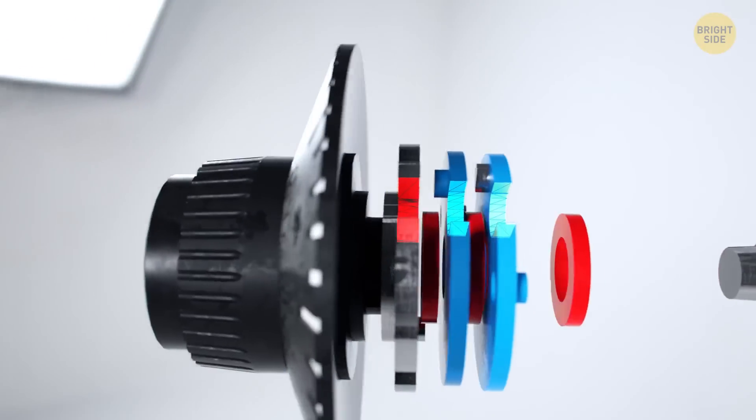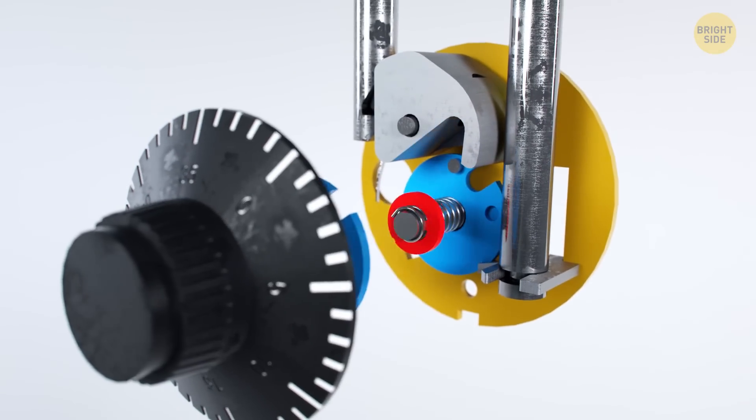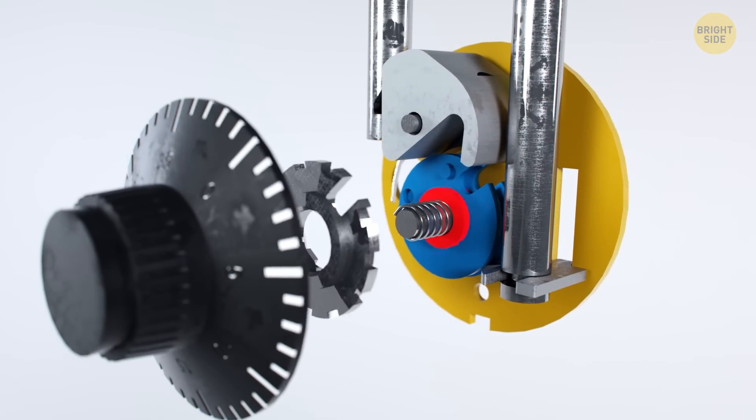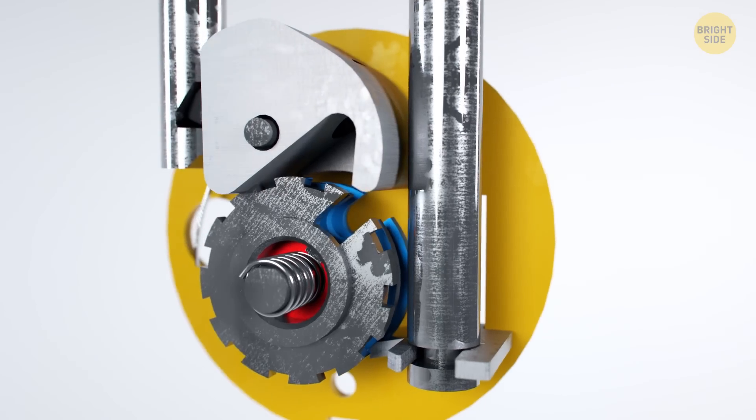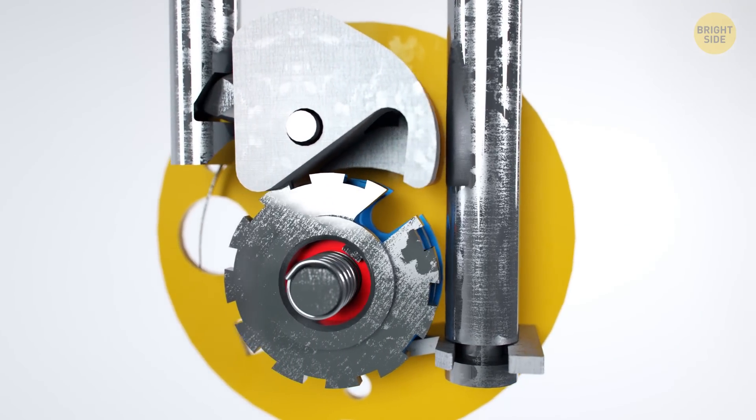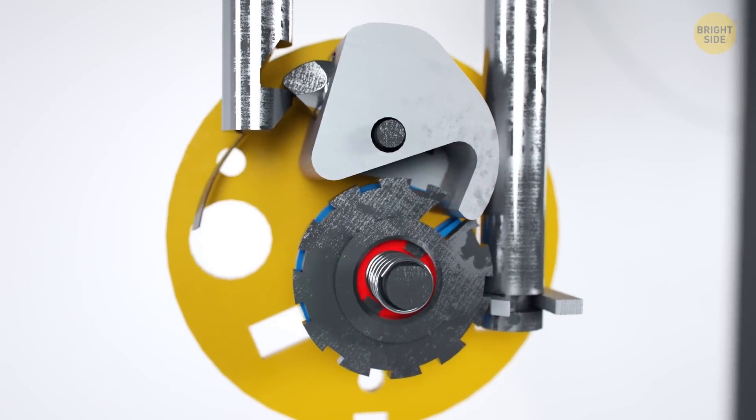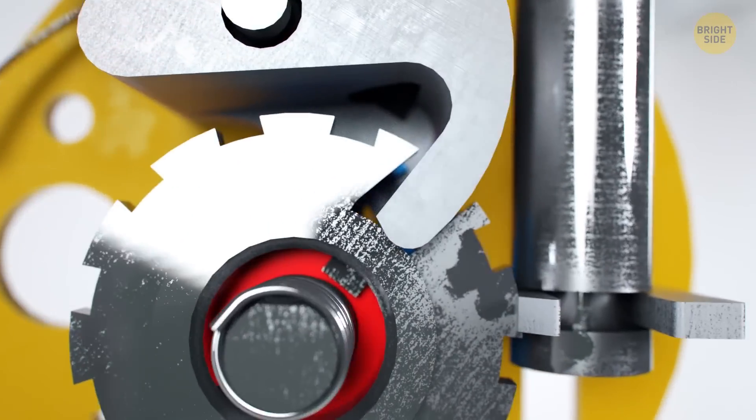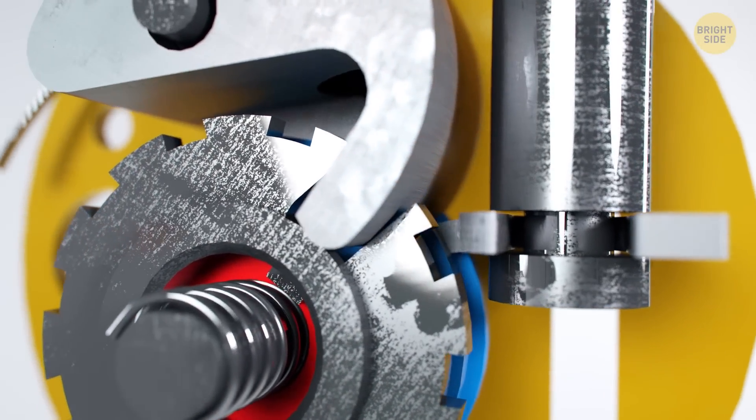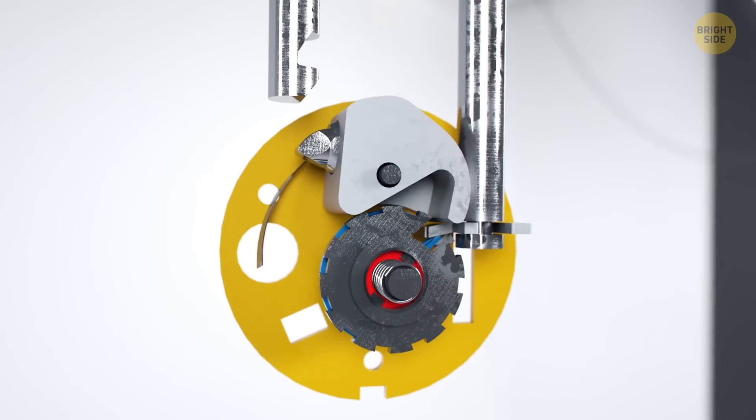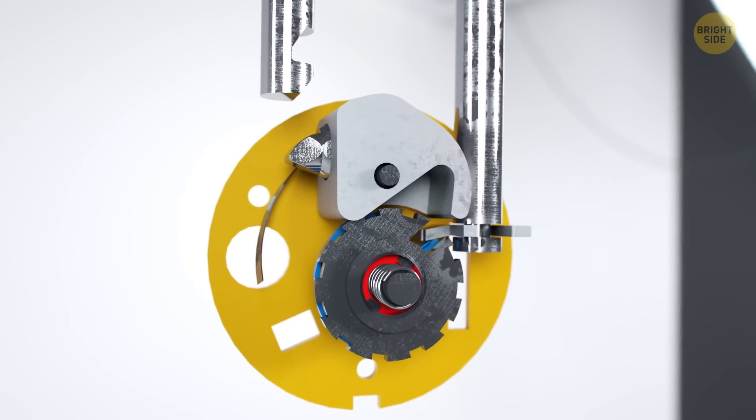We rotate the disc in the opposite direction again and immediately set the last number. We've got number 35 here. Now all the mechanism's discs are set in the correct position. Time to pull the shackle up. The lever begins to rotate, and its lower tip drops into the notches on the discs. Once the shackle is removed, the flexible plate forces the lever back into the start position.